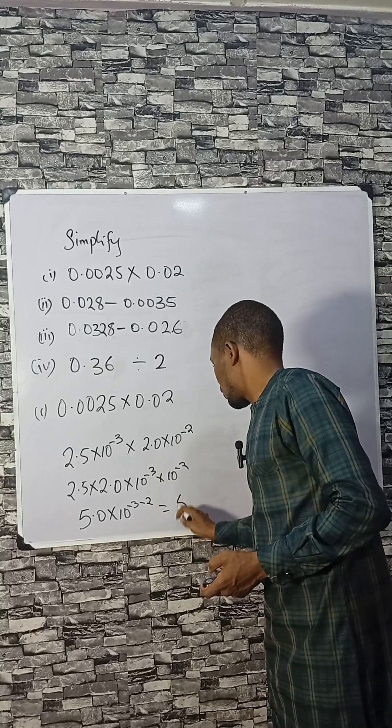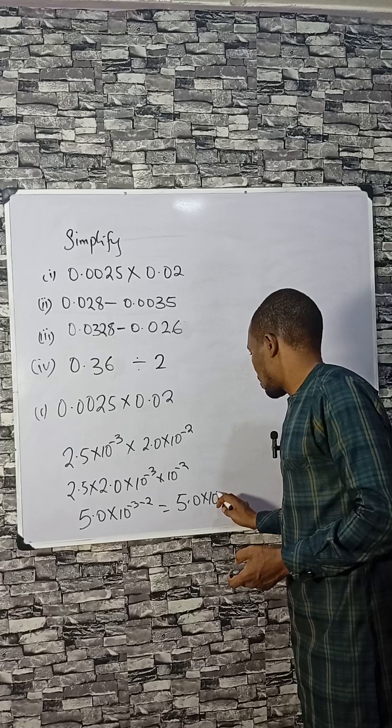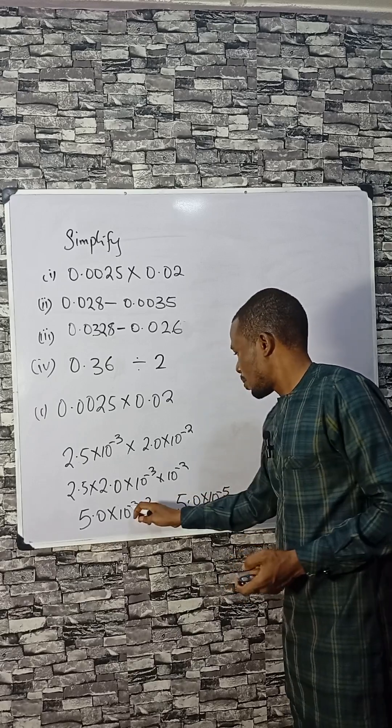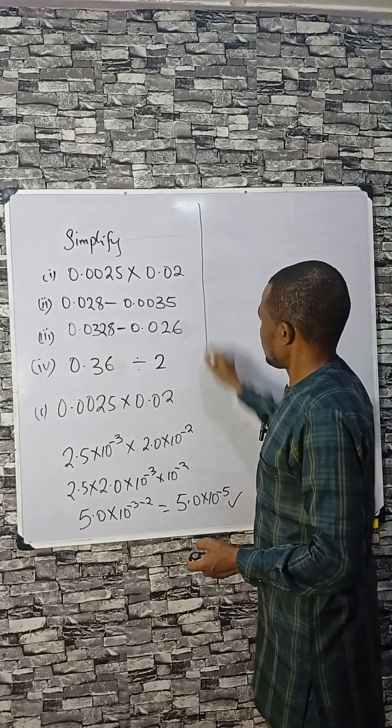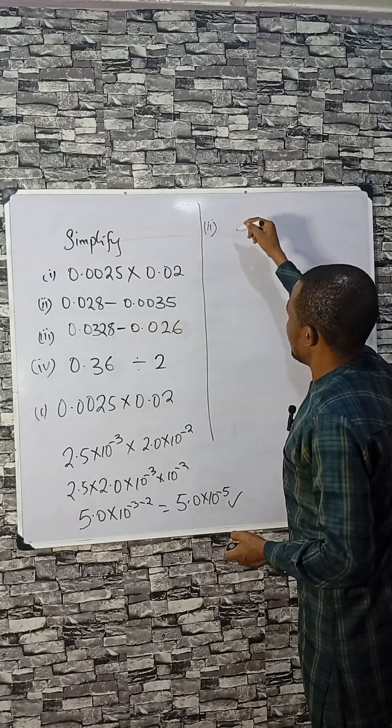That is 5.0 times 10 raised to the power of minus 5, because minus 3 minus 2 is minus 5. That's for the first one. The second one, we are asked to subtract them.